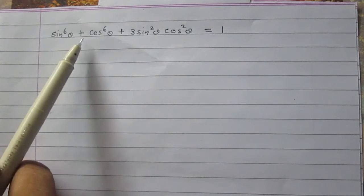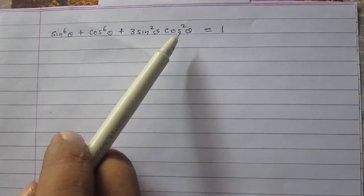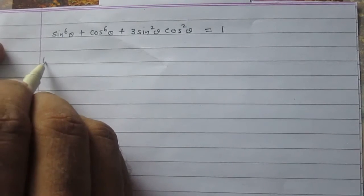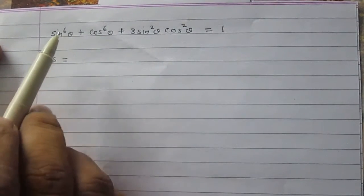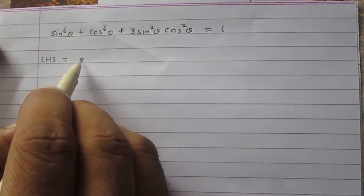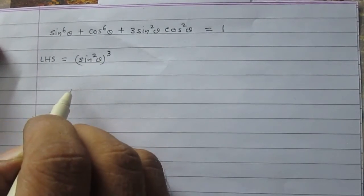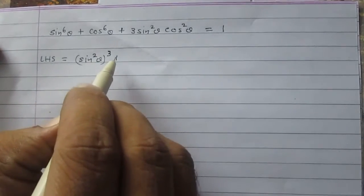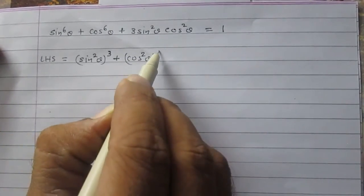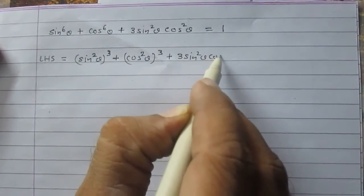Sin theta raised to power 6 plus cos theta raised to power 6 plus 3 sin square theta multiplied with cos square theta is equal to 1. Now let us consider the left hand side of this identity. The first term, sin 6 theta, can be written as sin square theta raised to power 3. The cos 6 theta can be written as cos square theta cubed. The next term is 3 sin square theta cos square theta.